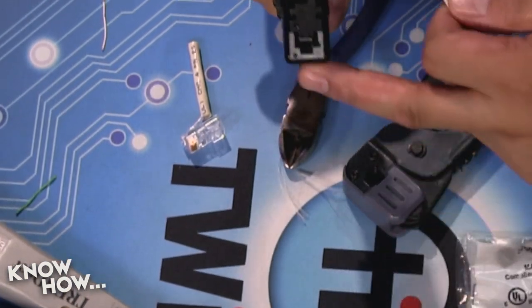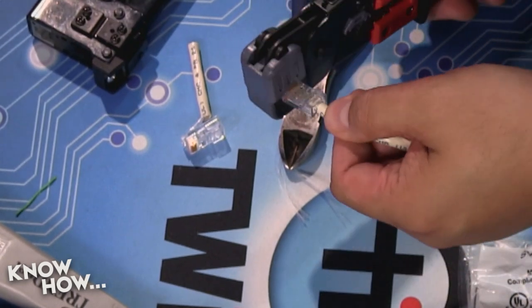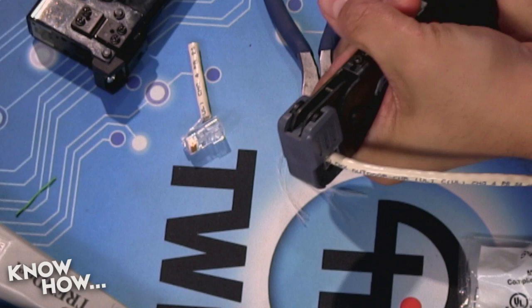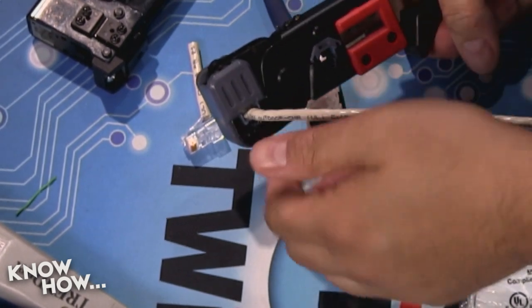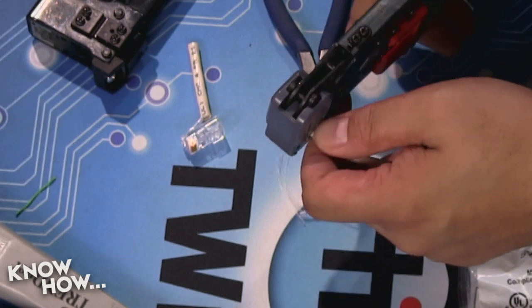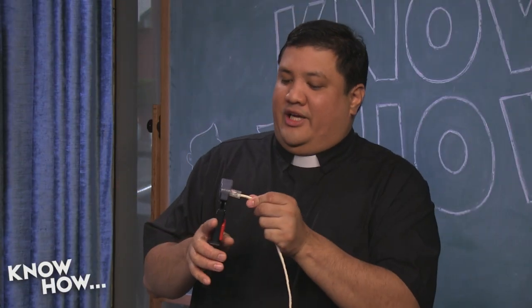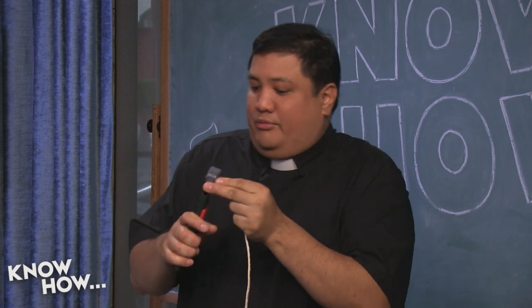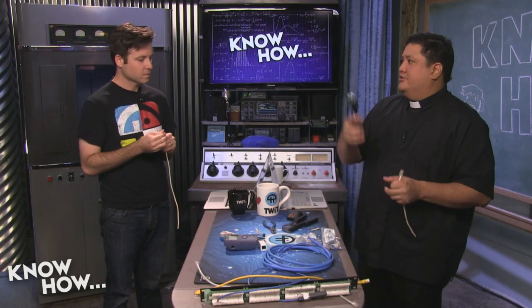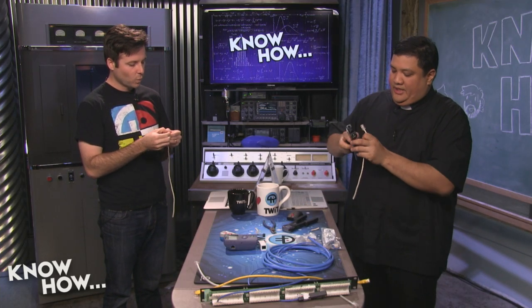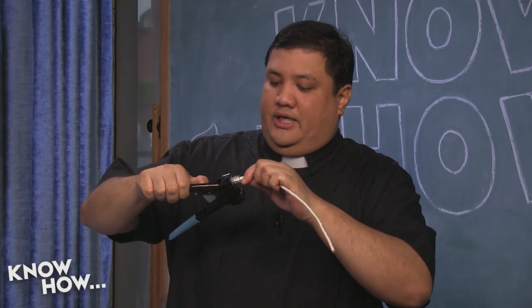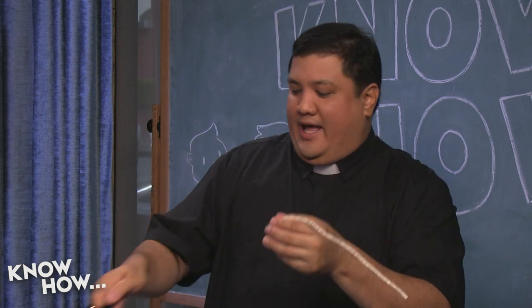Now put the head into the crimper. The cheap crimper squeezes down the gold teeth and clamps on the insulation to make firm contact. With a cheap crimper, you may need to squeeze a couple of times — advance it a little, pull back, keep crimping, because cheap ones don't bite everything simultaneously. The nicer ratcheting crimper at $150 versus seven bucks for the cheap one does it all at once.